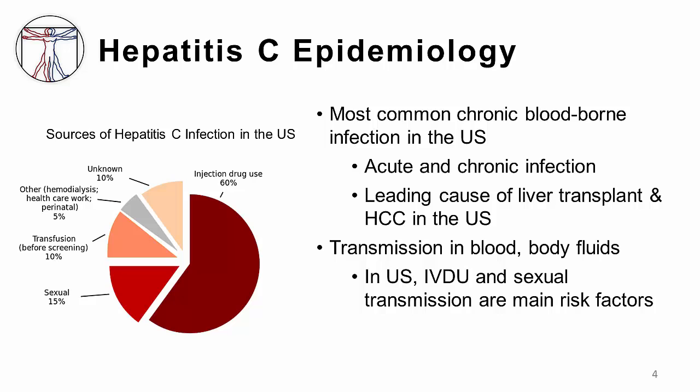Hepatitis C is the most common chronic blood-borne infection in the United States today. Like hepatitis B, this virus can lead to both acute and chronic infection, and it represents the leading cause of liver transplantation and hepatocellular carcinoma in the United States. Worldwide, the highest overall prevalence for hepatitis C virus exists in North Africa, the Middle East, and Central and East Asia.